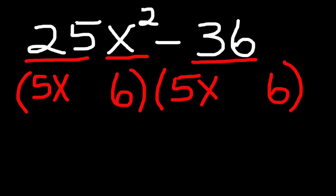And now, just as we've done before, we put a plus sign in front of one and a minus sign for the other, and those will be the factors of 25x squared minus 36.